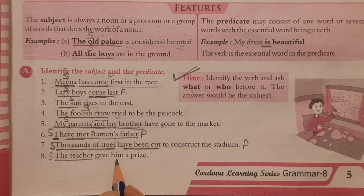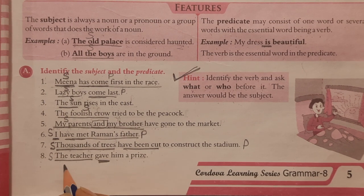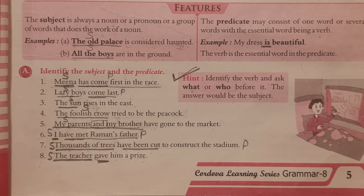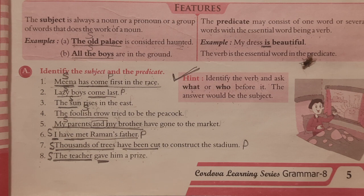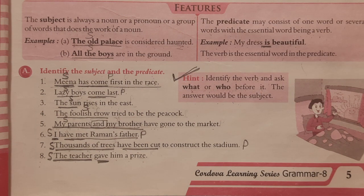'The teacher gave him a prize.' The verb is 'gave.' We ask: who gave him a prize? The teacher. So 'the teacher' is the subject. This topic is quite important because once you are able to find the subject in a sentence, it will become very easy to solve another grammar exercise called subject-verb agreement. That video is coming up later. Stay tuned to my channel. If you liked the video and learned something from it, do subscribe, like the video, and please share it with your friends. Thank you all for watching.